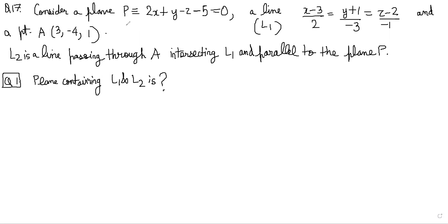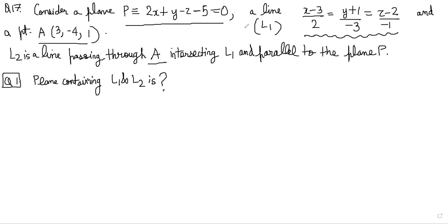Consider a plane P whose equation is given, a line L1 whose equation is again given, and a point A which is (3, -4, 1). Now L2 is a line which passes through A, intersects L1, and is parallel to the plane P.